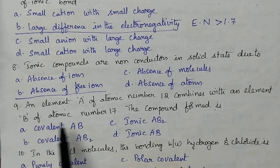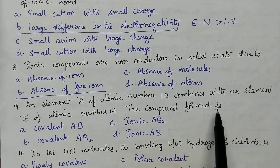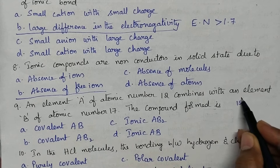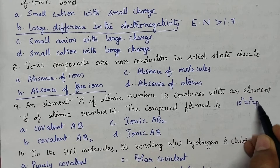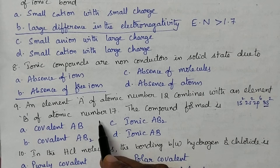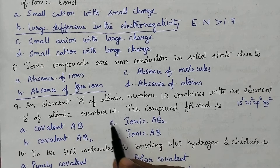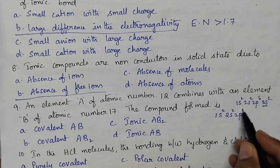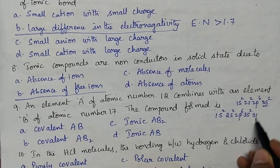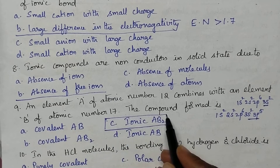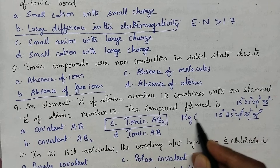An element A of atomic number 12 combines with element B of atomic number 17. The compound formed is: element A has configuration 1s², 2s², 2p⁶, 3s² — 2 electrons in the outermost orbit. Element B has configuration 1s², 2s², 2p⁶, 3s², 3p⁵ — 7 electrons in the valence shell. So the compound formed is ionic of AB₂ type, and the example is magnesium chloride.